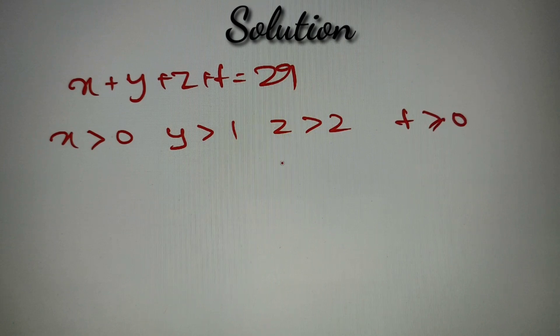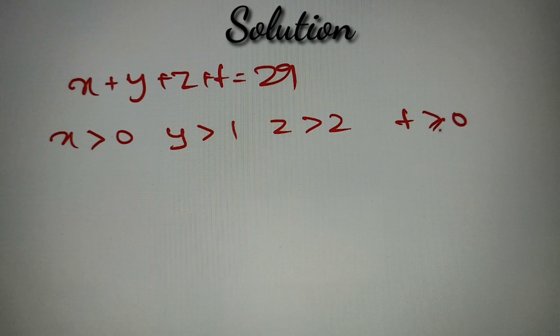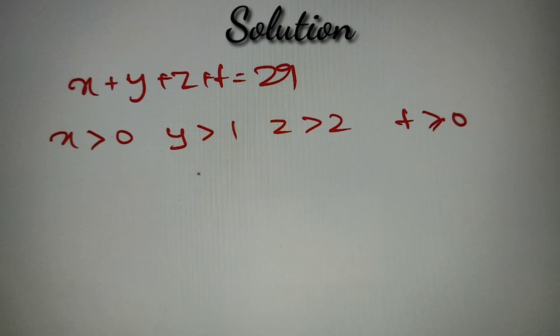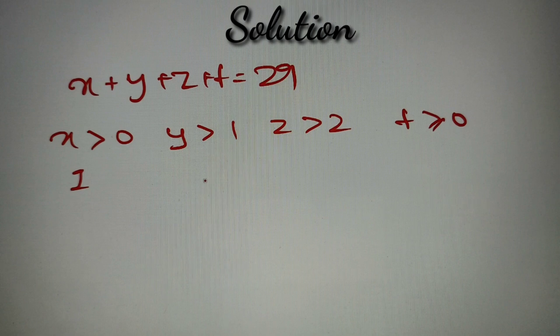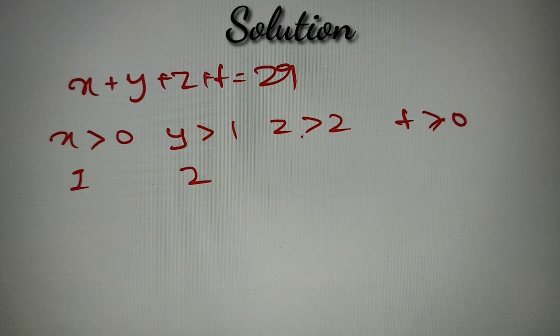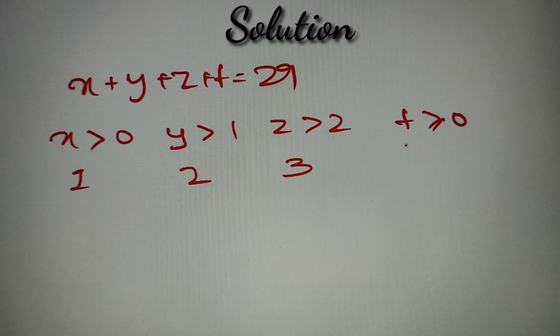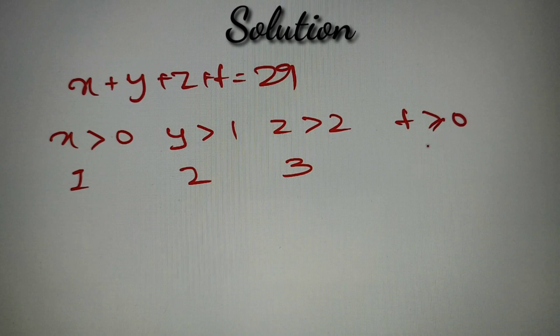Now whenever we are given to find the number of integral solutions with some restrictions, what we have to do is we have to first clear all the restrictions. So if x is greater than 0, the minimum value that x can take is 1. If y is greater than 1, then the minimum value that y can take is 2. If z is greater than 2, then the minimum value that z can take is 3, and if t is greater than or equal to 0, the minimum value that satisfies t is equal to 0.